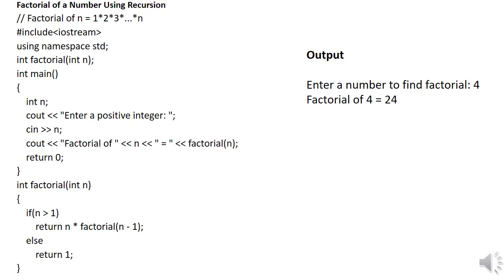For example, suppose I take an input value of 4. That value 4 is assigned to variable n in the main function. Then I call the function factorial by passing the value 4. The control goes to the function definition. It checks if 4 is greater than 1 — the condition is true. It will return 4 into factorial of n minus 1, which is factorial of 3. So the factorial function is calling itself again, passing the value 3.